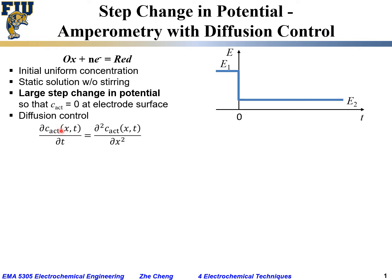Under diffusion control, the governing equation is Fick's second law of mass transfer: the local concentration change with time equals the diffusion coefficient times the second partial derivative of local concentration with respect to location X. We remind ourselves there is no stirring — it's a static solution, sometimes called quiescent solution — no forced convection, and we also neglect migration.